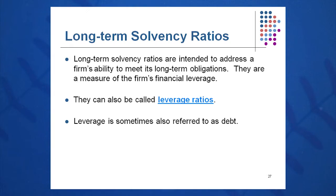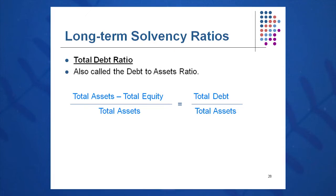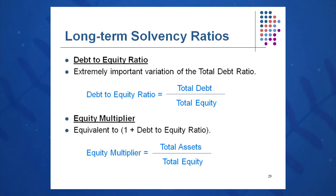The total debt ratio is total debt to assets. Total debt equals total assets minus total equity, which gives us total liabilities of all kinds — found on the balance sheet. Total debt is current plus long-term liabilities divided by total assets. Another very important long-term solvency ratio is debt to equity: what percentage of our equity is our debt? How leveraged are we? This is total debt to total equity, again both found on the balance sheet.